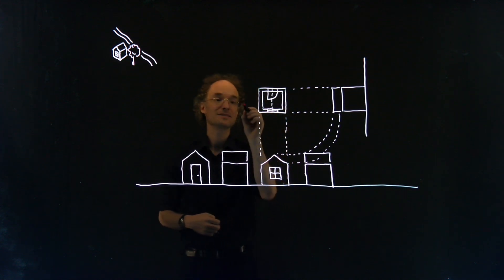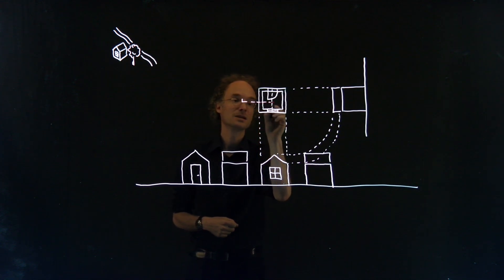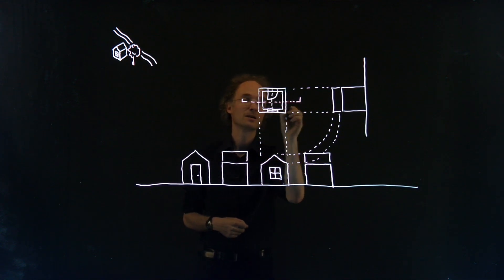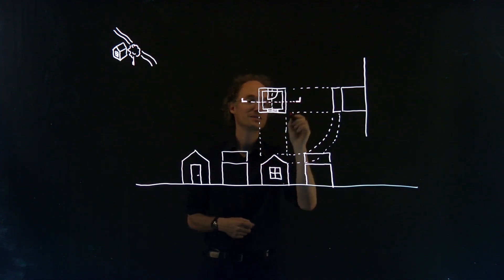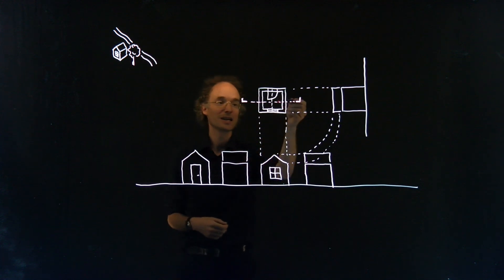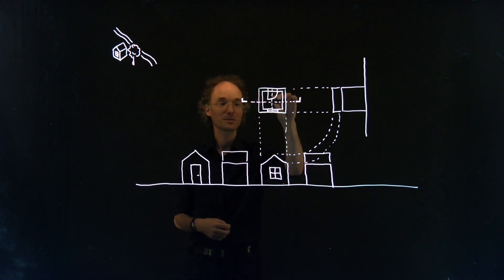So a section is as if I slice the building in two halves and I look at one half. So I take the cut here and I'm going to draw it here.